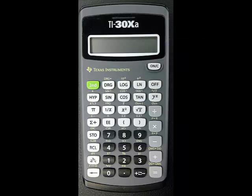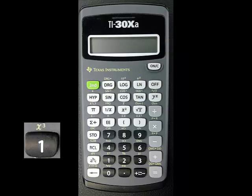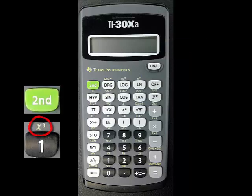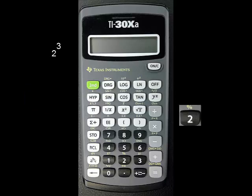The cube function, or third power, has its own button. It is the second function of the 1 key. To find 2 cubed, press 2, then 2nd, then 1. The answer 8 should appear on the screen.